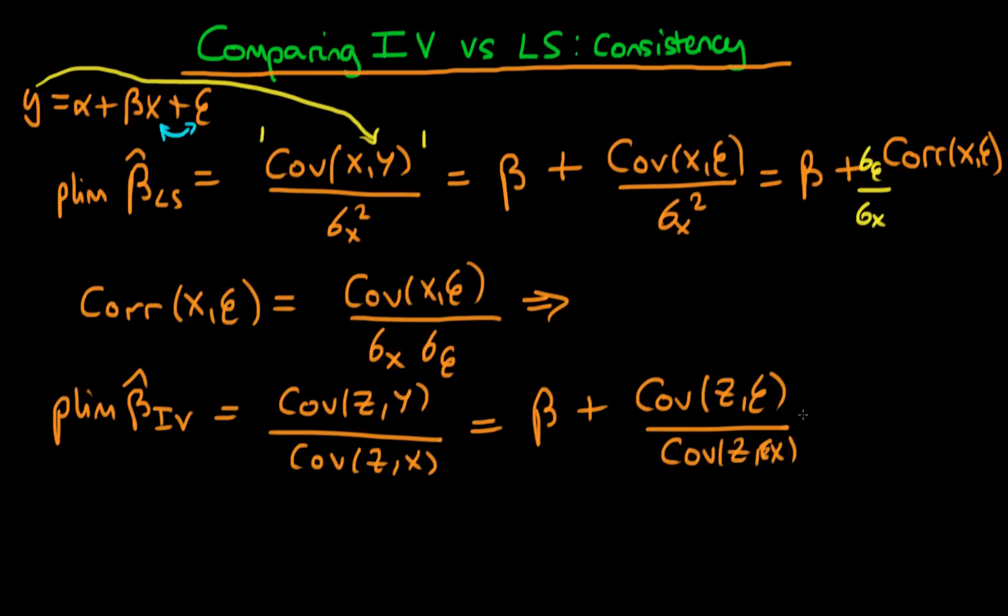And then when we simplify this we can write this if I write it down here it's equal to beta plus the correlation of z with epsilon divided by the correlation of z with x times sigma epsilon divided by sigma x.